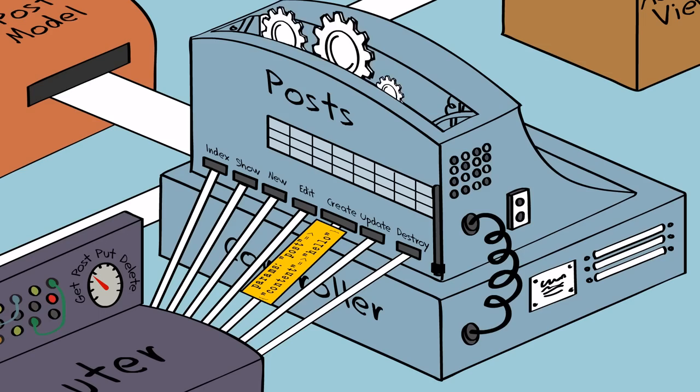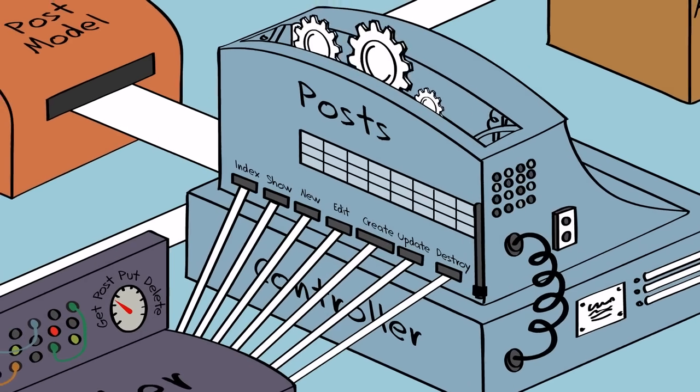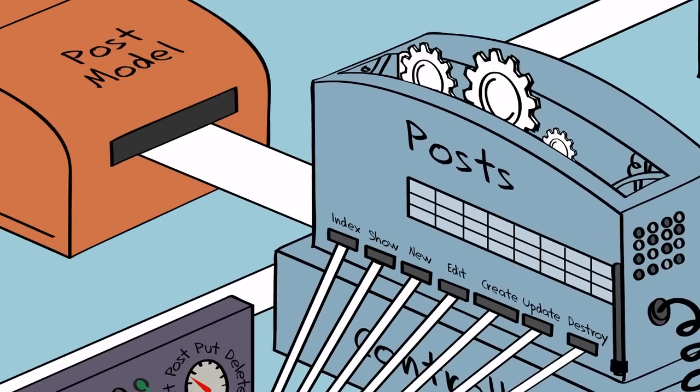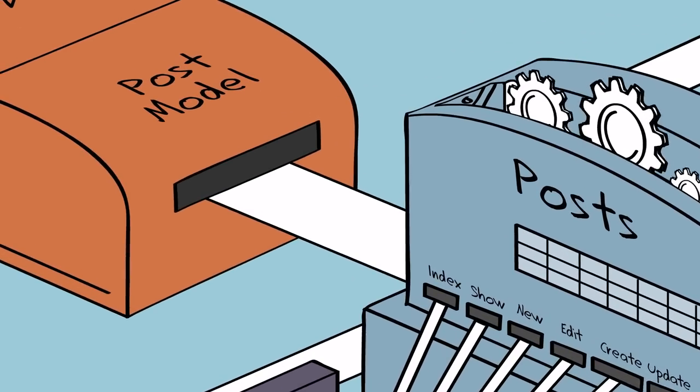Before the card can enter the controller action, it needs to pass the controller's filter. The controller lets in this card and copies the appropriate data from it to a message card, which it sends to the model.